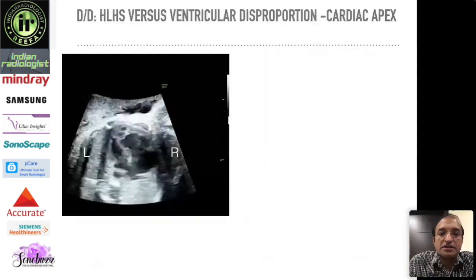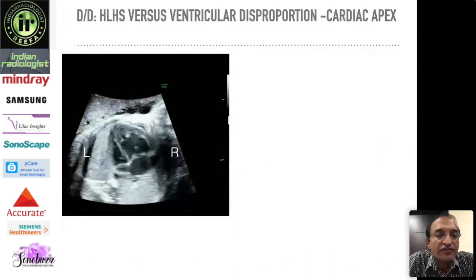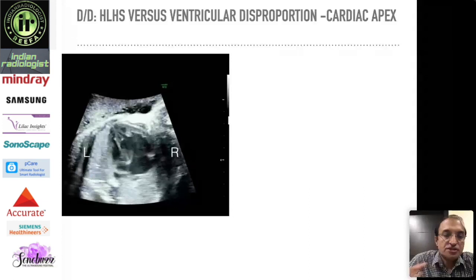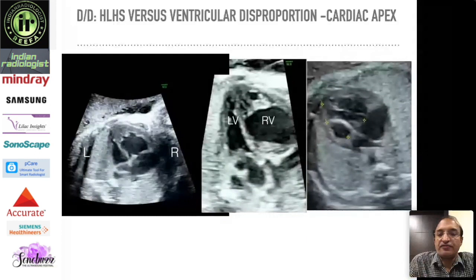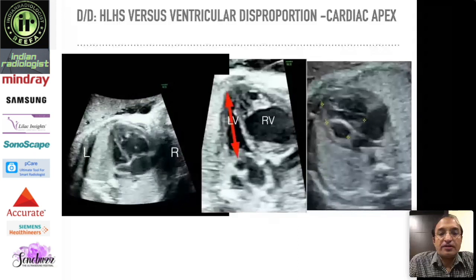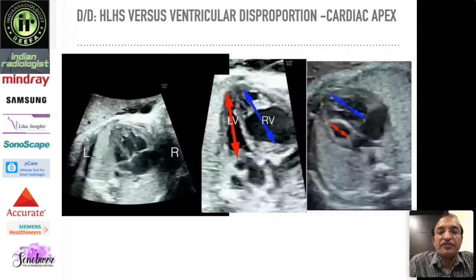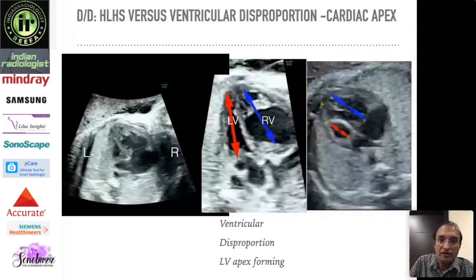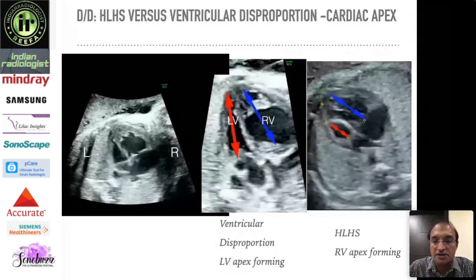The next case shows a small left ventricle with a large right ventricle. How do you differentiate this from HLHS? In this case, even though the left ventricle is small, it continues to form the apex of the heart. In HLHS, the left ventricle is so small that it does not form the apex — the right ventricle is apex-forming. So in ventricular disproportion, the LV remaining apex-forming is one key differentiating anatomical feature.